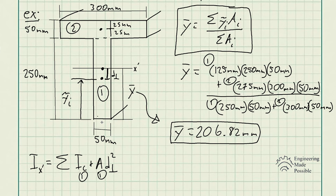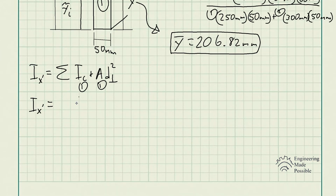Let's solve for geometry number one — that rectangle. The area moment of inertia of a rectangle is (1/12) × base × height³. The base of that rectangle is 50 millimeters.